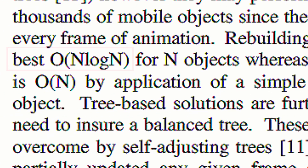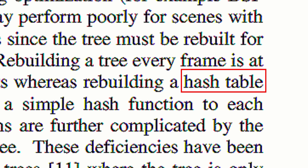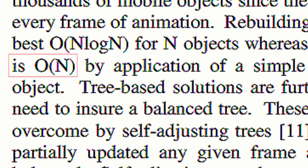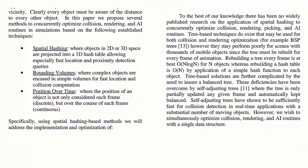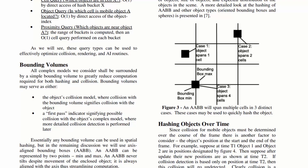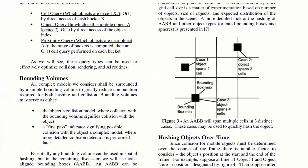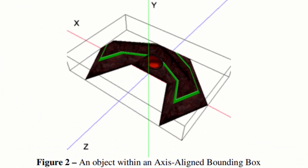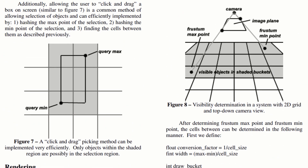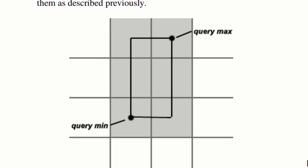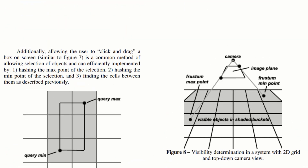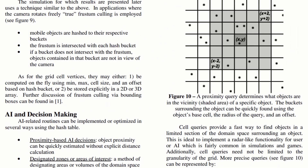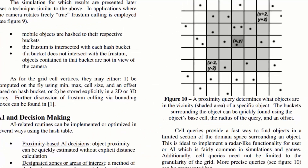It reiterates the performance boost you can expect to see in moving to a hashing model as opposed to a quad tree data structure. It goes beyond simple point locations and considers bounding volume implications for a hash table setup, as well as object collision detection on a frame-by-frame basis, but also collisions which occur over a specified time frame. This allows for more precise collision detection for small or fast-moving objects. It also looks at field of view implications for object detection and rendering, and AI and decision-making calculations for proximity-based or zones of interest within designated areas of the domain space.